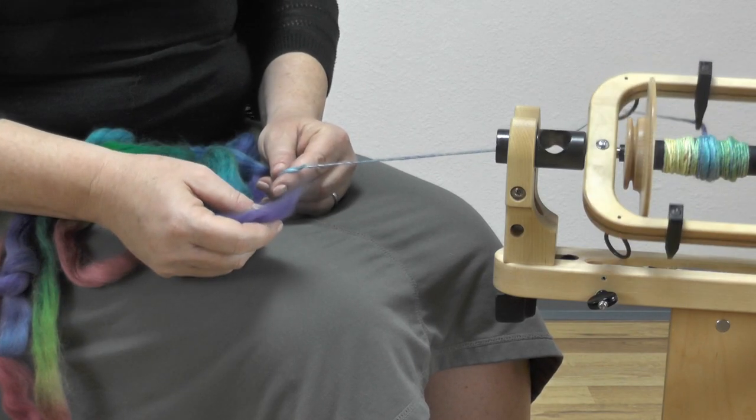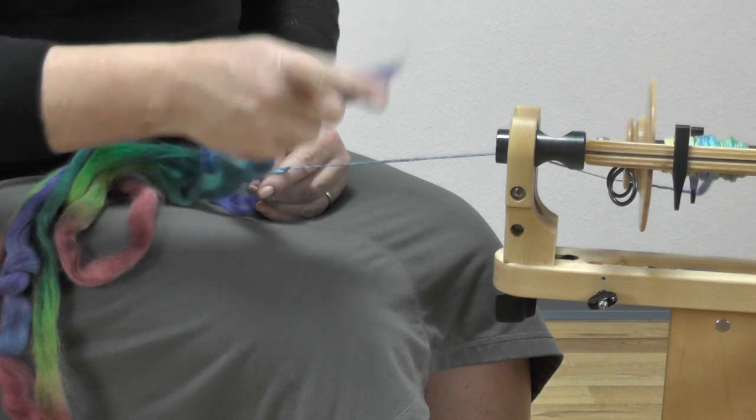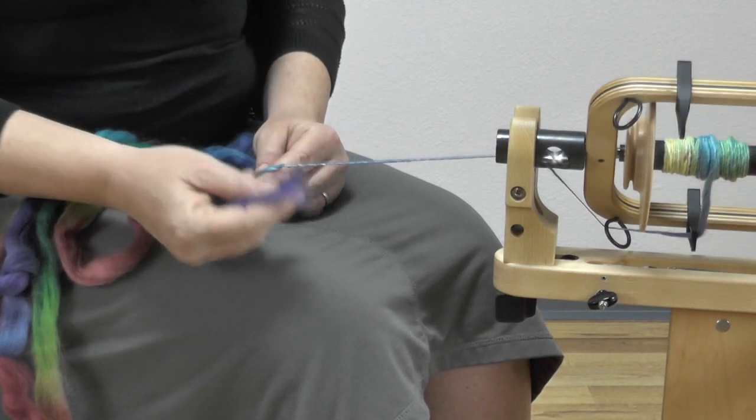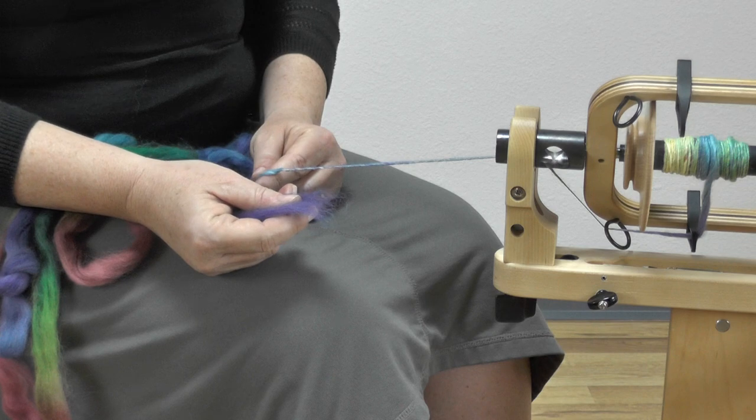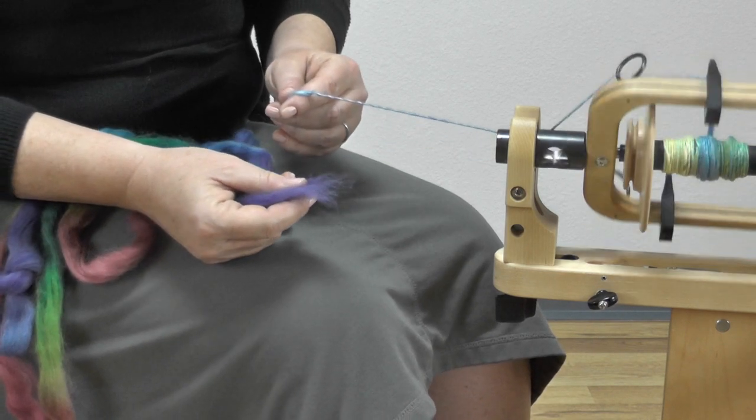I have the wheels set up with a slow whirl. I want the flyer to move slowly and the yarn to draw on quickly because this yarn does not require a lot of twists.